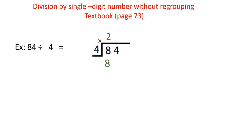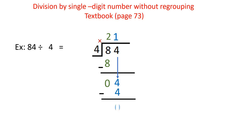Write 8 underneath and subtract to get 0. Now I'm done with the first digit. I look to the next digit, which is 4. How many 4s in 4? I have 1. So 4 divided by 4 equals 1 — write the answer on top. Then multiply: 1 times 4 equals 4, subtract to get 0. So the answer is 21 with remainder 0. If you multiply 21 four times, you will have 84.